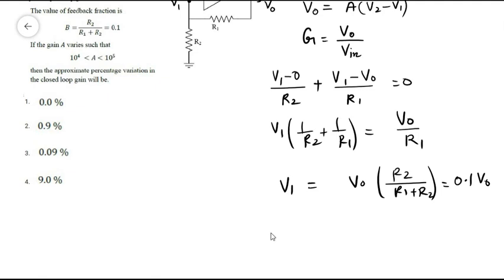With this we can calculate v_output. v_output equals A times (v2 - v1). v2 is v_in minus v1, where v1 is 0.1 v_o. From that, v_o will be equal to A times v_in upon (1 + 0.1 times A).